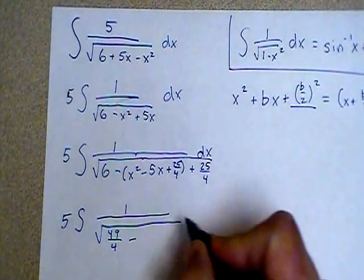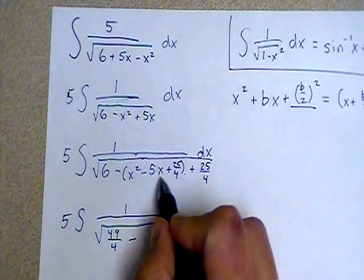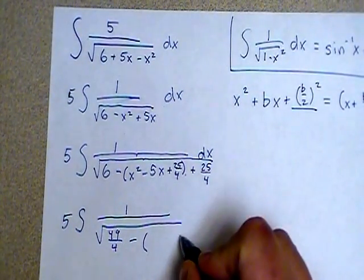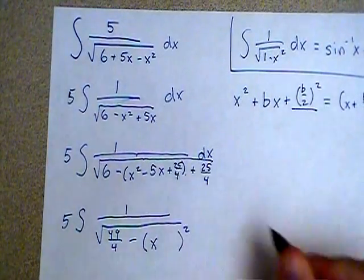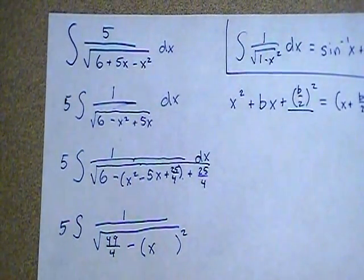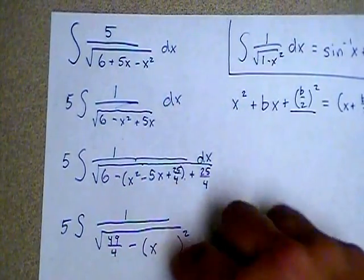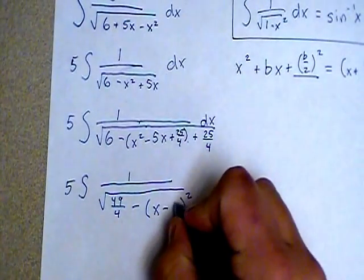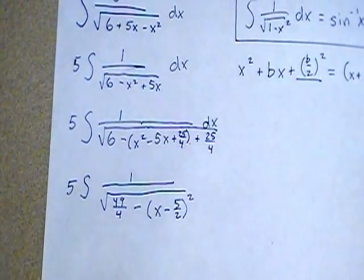And then minus, well rather than this trinomial, I'm going to factor it, since I just completed the square on it, to that one set of parentheses being squared, and the thing that's going to be in there with the x is going to be b over 2. b is negative 5. So what I'm going to put in here with the x is minus 5 halves.